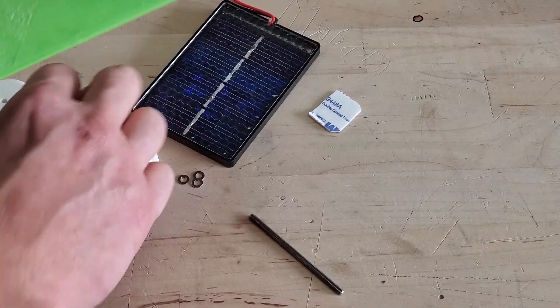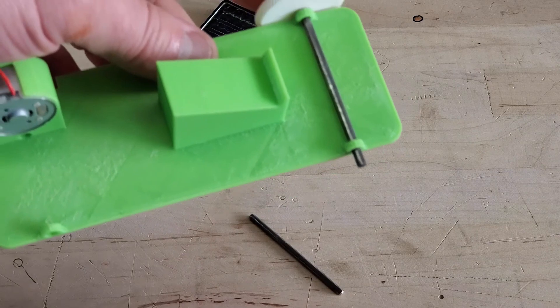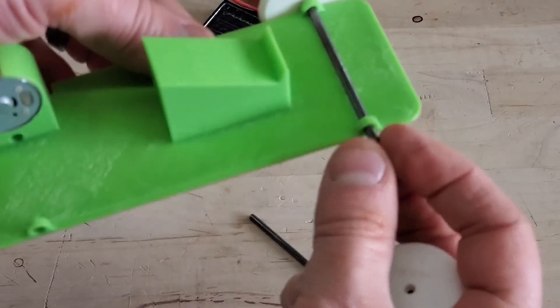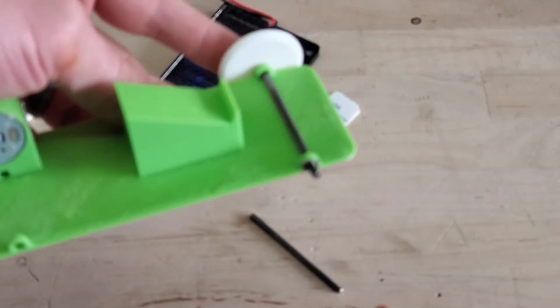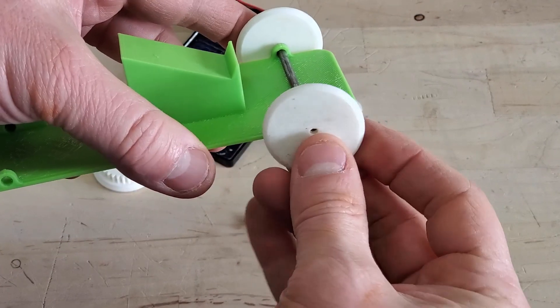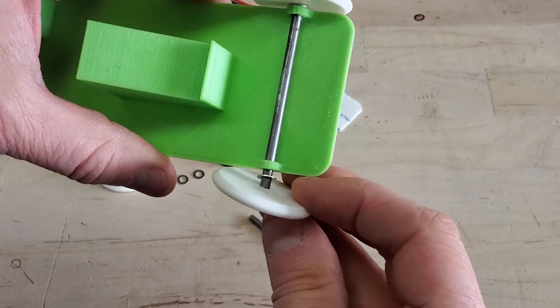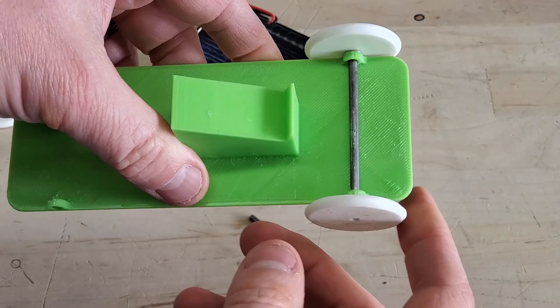Grab another wheel and washer, slide your washer onto the axle, and then push your wheel onto the axle. You should get wheels that rotate freely.